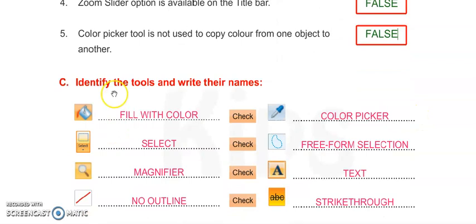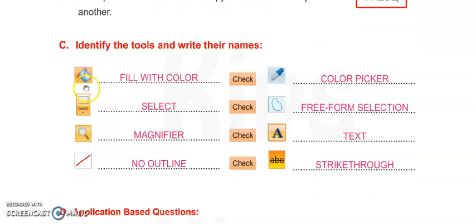Now Exercise C - Identify the tools and write their names. Number one: This is FILL WITH COLOR tool. Next: SELECT tool, MAGNIFIER tool, NO OUTLINE tool, COLOR PICKER tool, FREE FORM SELECTION tool, TEXT tool, and STRIKE THROUGH tool. You have to draw these tools in your copy and write the name of each tool.